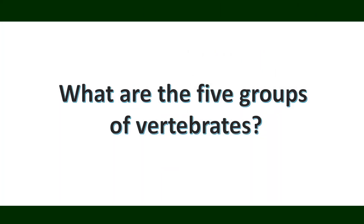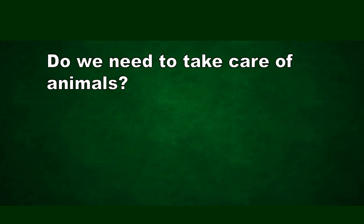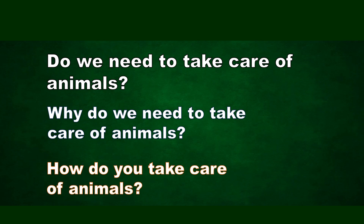Now class, what are the five groups of vertebrates you have learned today? We have mammals, birds, fish, amphibians, and reptiles. Now class, I have questions for you. Write your answers in your science notebook or science journal. Are you ready? Let's start. Do we need to take care of animals? Why do we need to take care of animals? How do you take care of animals?